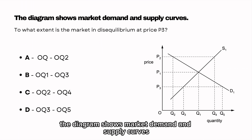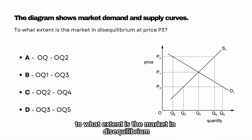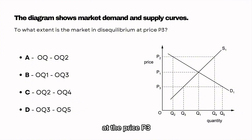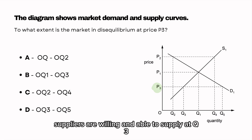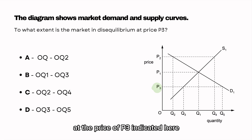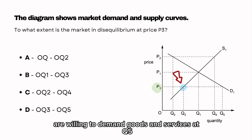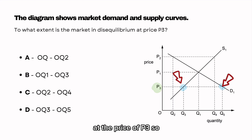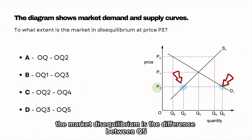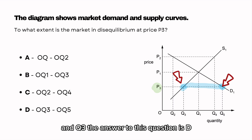The diagram shows market demand and supply curves. To what extent is the market in disequilibrium at the price P3? Suppliers are willing and able to supply at Q3 at the price of P3, while consumers are willing to demand goods and services at Q5 at the price of P3. So the market disequilibrium is the difference between Q5 and Q3. The answer to this question is D.